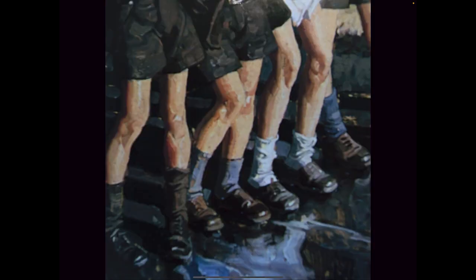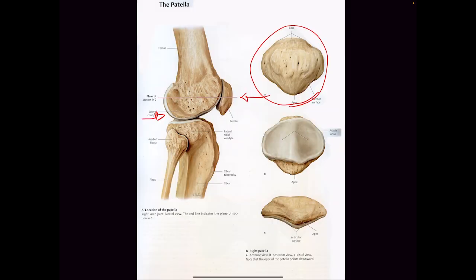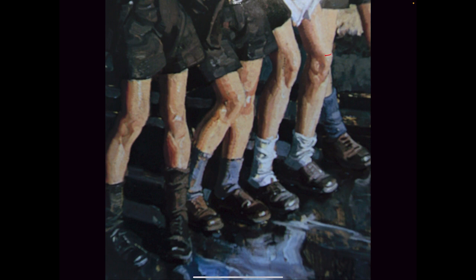When you look at the patella, it has a very specific shape. Can anyone identify the shape? Looks like a stop sign. It is an octagon — an eight-sided shape. So when you look at the patella, you can actually see the octagon in perspective in various specific landmarks.